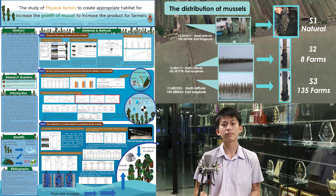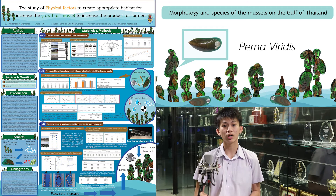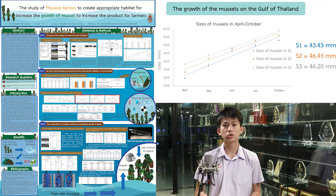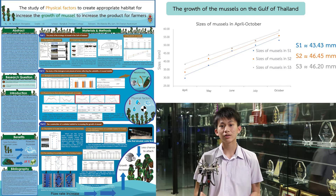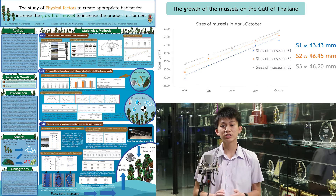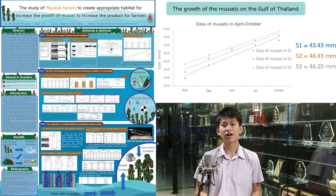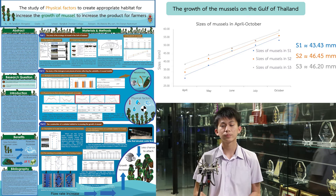All of the mussel samples that were collected belong to the species Perna viridis. Then, I measured the shell length of mussels to study their growth, and I found that mussels in the ST area, which is the area farthest away from the host, has the highest growth.